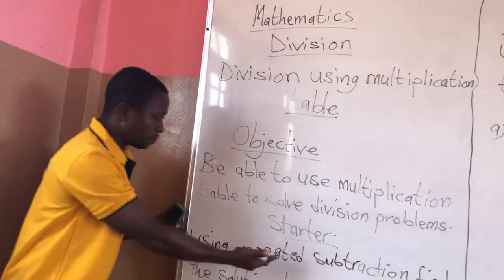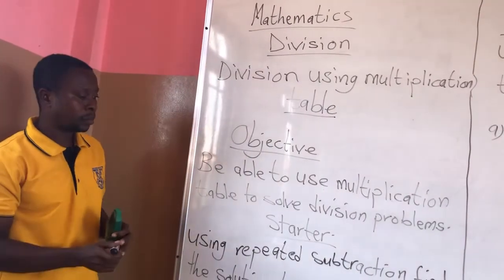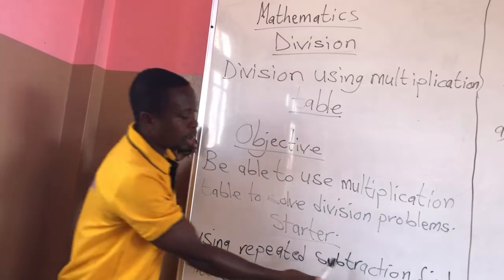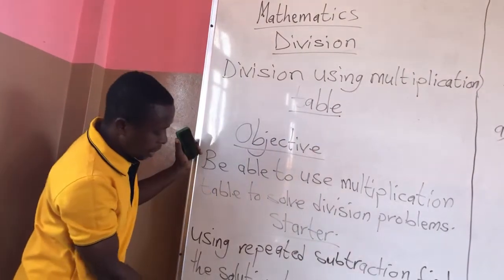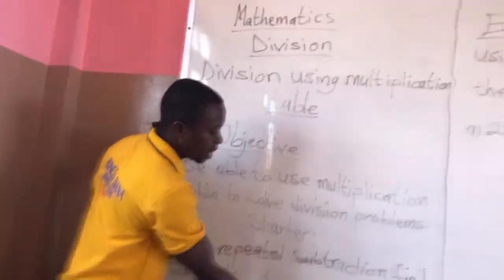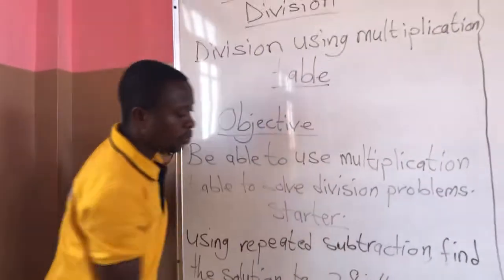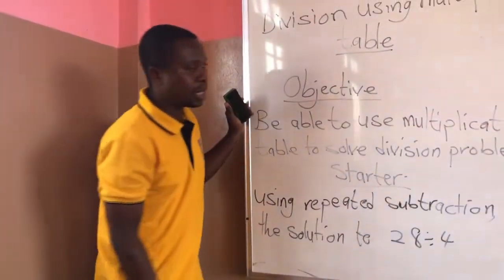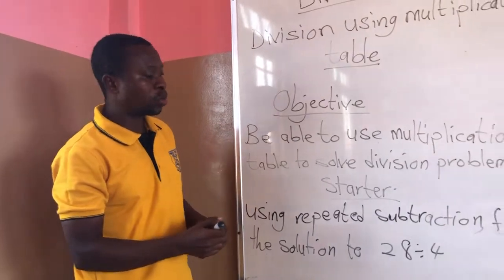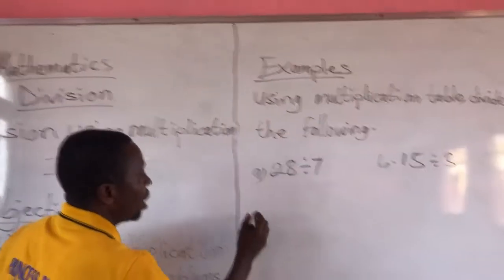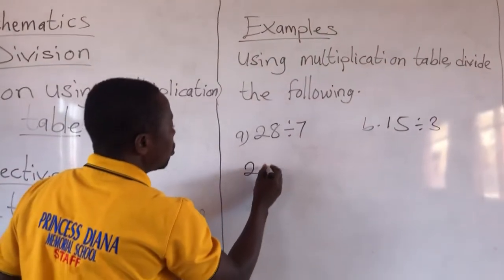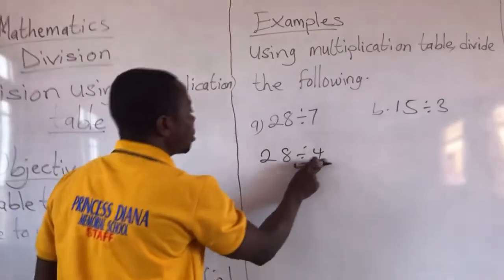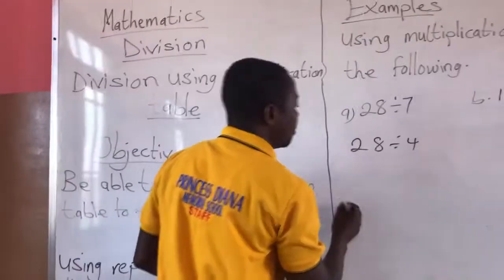Now let's take this as our starter. Using repeated subtraction, find the solution to 28 divided by 4. So we continue to subtract the divisor from the dividend.